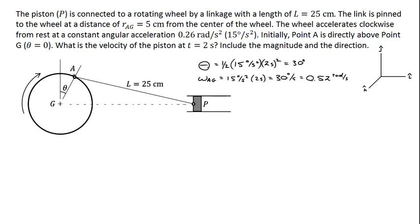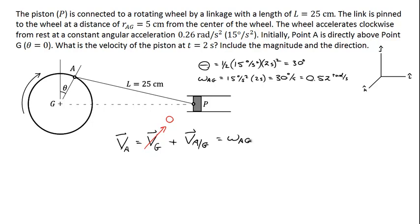I can quickly deduce the velocity of point A. Using the relative velocity equation, the velocity of A equals the velocity at point G plus the velocity of A with respect to G. The velocity at point G is zero — it's just a stationary axle. The velocity of A with respect to G equals the rotational speed omega AG crossed with the position vector of A with respect to G — that vector right here. We'll need to figure out the x and y components of this vector.